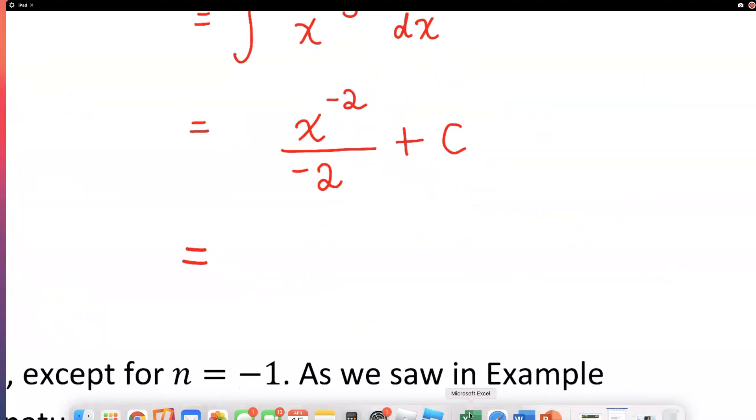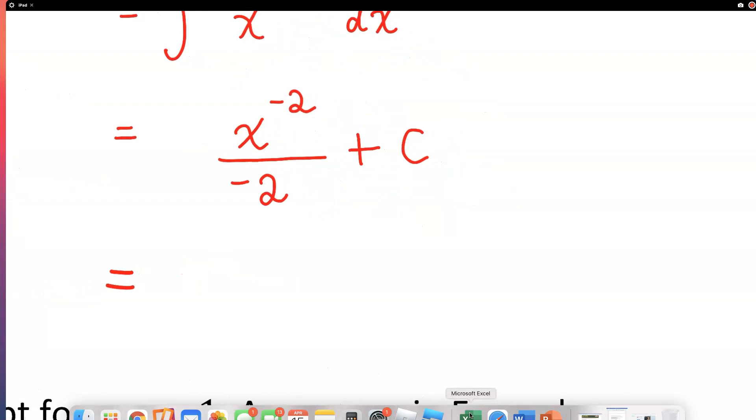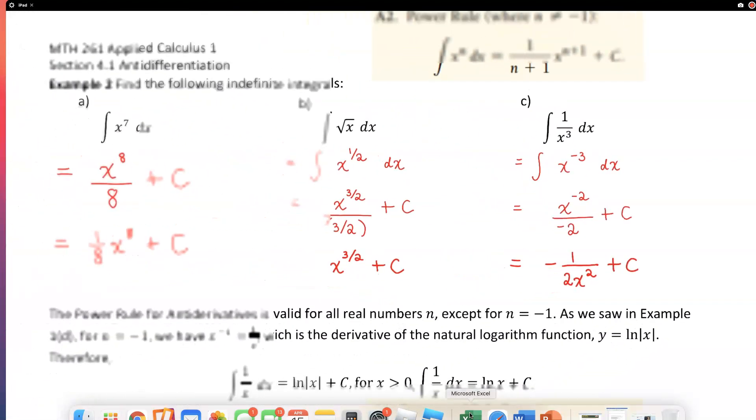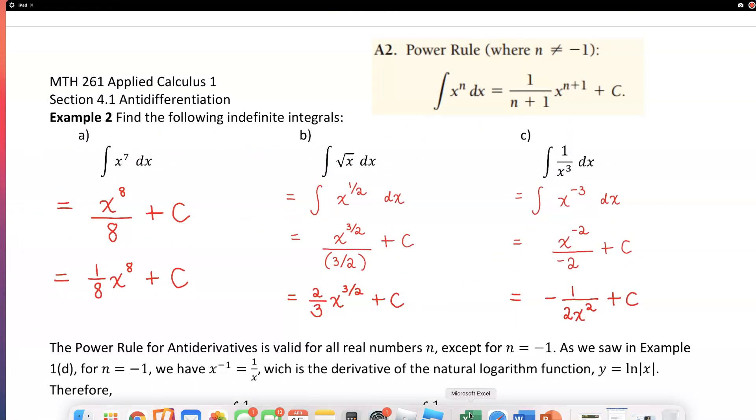So I can say this is the same thing as negative one over two x squared plus C. And all I did was I just put this x to the negative second power in the bottom of the fraction because it had a negative exponent. But everything else is just the same. So that is it for the three short examples using the power rule.